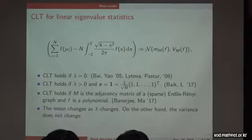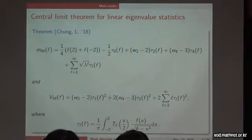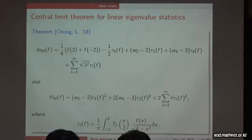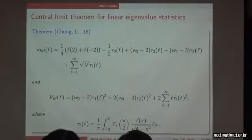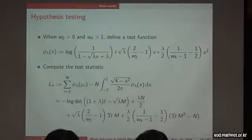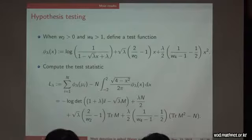This is very interesting: the variance does not contain anything about lambda, but the mean does contain lambda. So if lambda is zero, you have a Gaussian; if lambda is nonzero, you have a different Gaussian with a different mean. Since the means are different, you can construct a test by distinguishing two Gaussians. We introduce a function phi_lambda — it looks complicated but is actually very simple. The proof is about two pages long, and the only mathematical tool used is Gaussian integration by parts.